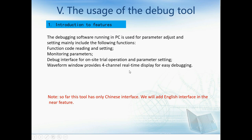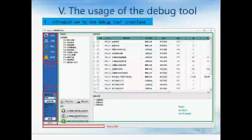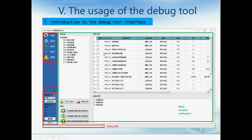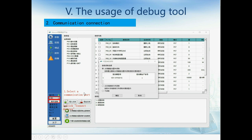The debugging software running on PC is used for parameter adjustment and setting. It includes: function code reading and settings, monitoring parameters, a debugging interface for on-site trial operation and parameter settings, and waveform windows providing full-channel real-time display for easy debugging. Note that so far this tool has only a Chinese interface; English will be added in a future version. This is the interface of the debug tool. Here is the function area where you can choose different functions. Here is the communication part. This is the state toolbar. The green area is the main workspace where you can change parameter values. First, select the COM port and then click the connect device button.